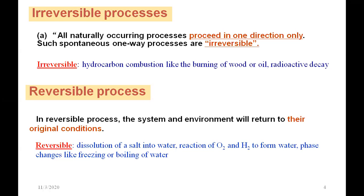In a reversible process, the system and environment will return to their original condition, starting from a state and returning to the original state or original conditions. For example, the dissolution of salt into water, reaction of oxygen and hydrogen to form water, or phase changes like freezing or boiling of water. These are all examples of reversible processes.